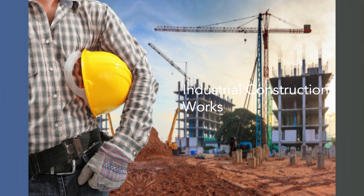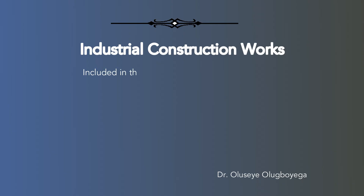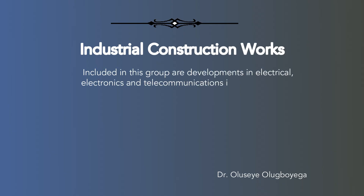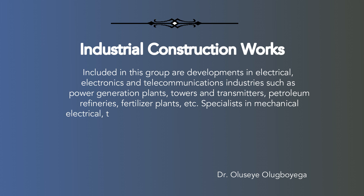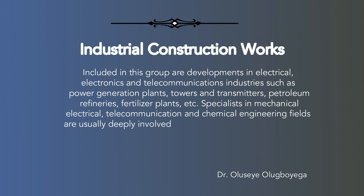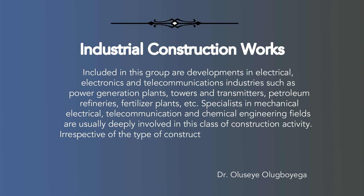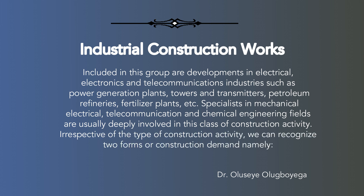Industrial construction works. Included in this group are developments in electrical, electronics and telecommunications industries, such as power generation plants, towers and transmitters, petroleum refineries, fertilizer plants, etc. Specialists in mechanical, electrical, telecommunication and chemical engineering fields are usually deeply involved in this class of construction activity.